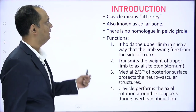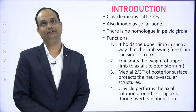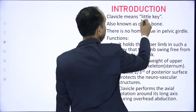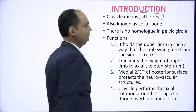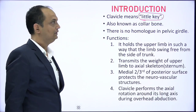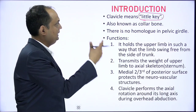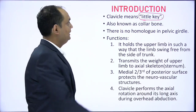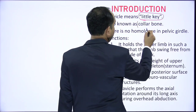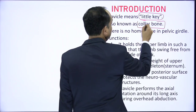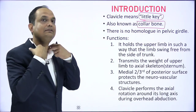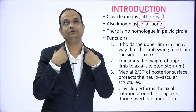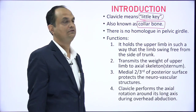The clavicle is known as 'little key.' This is a very commonly asked question in your exam — we will see why it is known as the little key. The most common name is 'collar bone' because this bone is present on both sides of the collar. So the name collar bone comes from that.